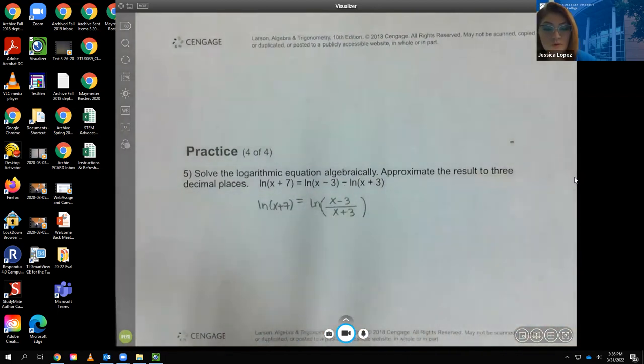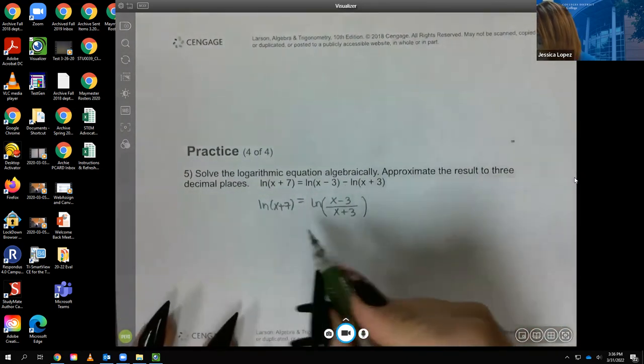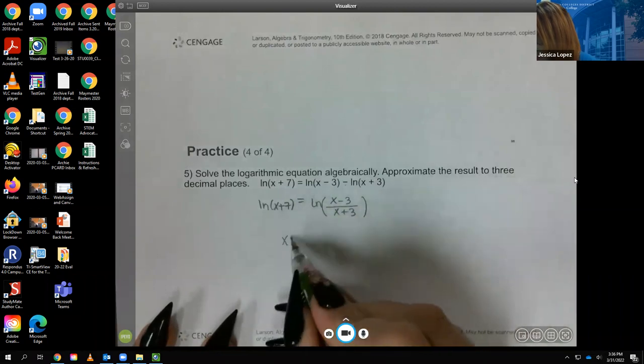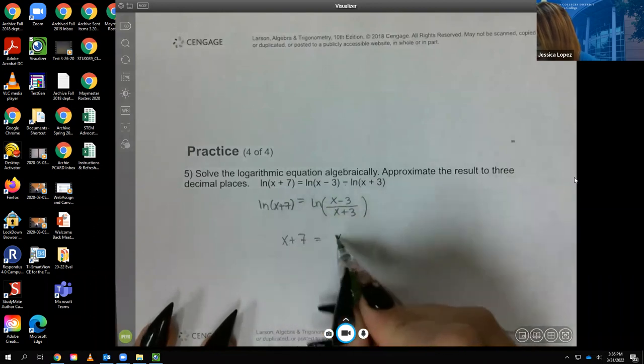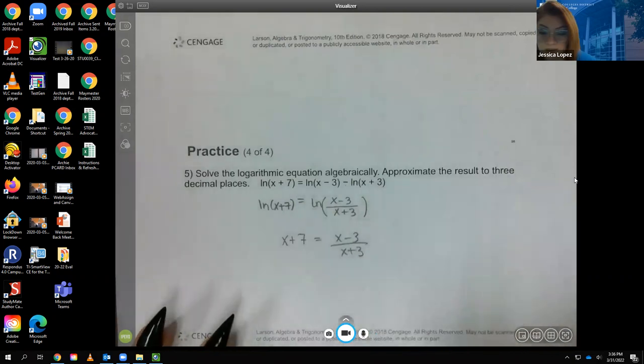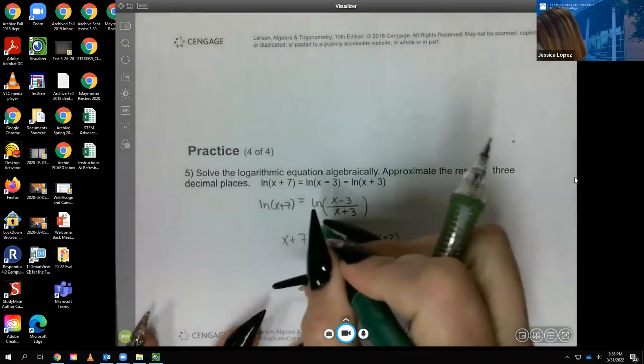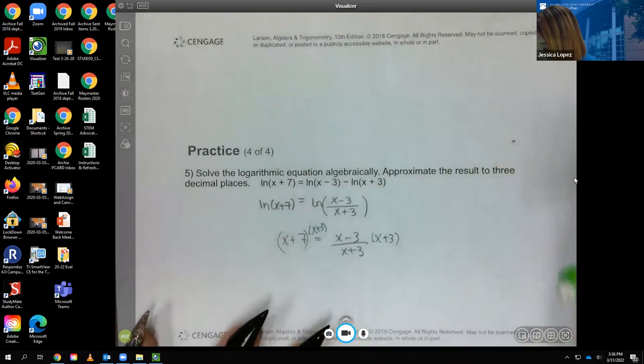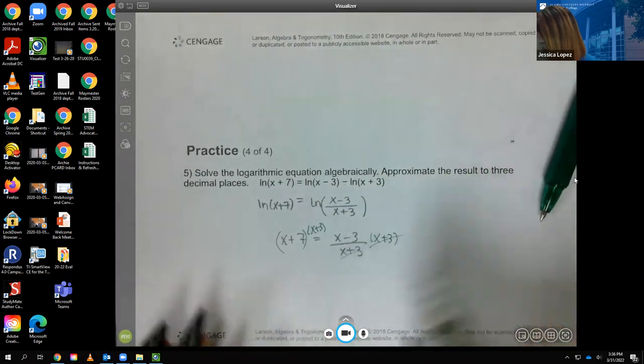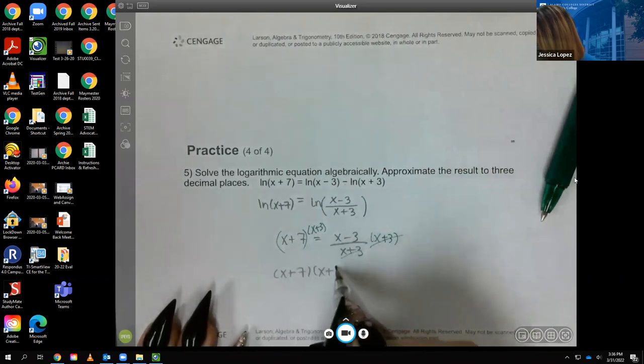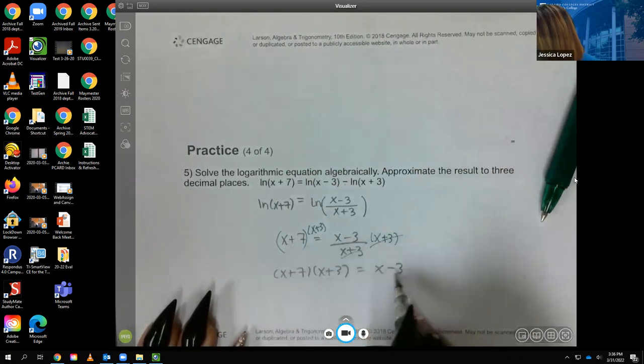Now that I have one log and one log, we use the one-to-one property that says in order for these two things to be equivalent to each other, this argument has to equal this argument. And now this is a rational equation, which we can solve by multiplying by the common denominator. So then I get (x + 7)(x + 3) equal to x - 3.